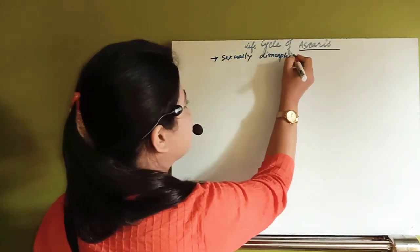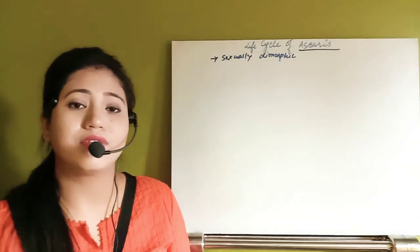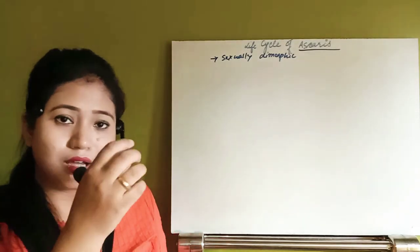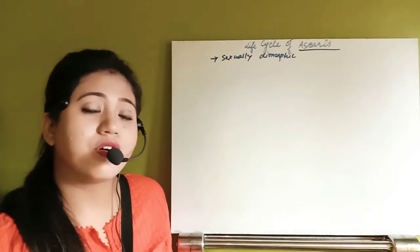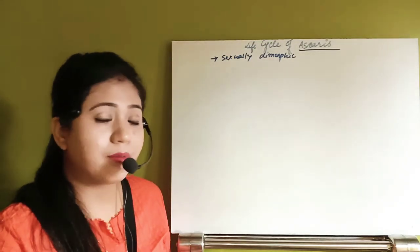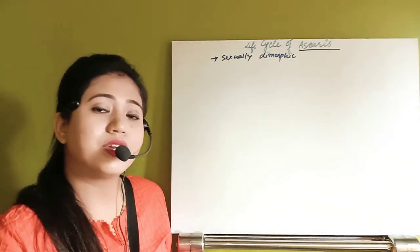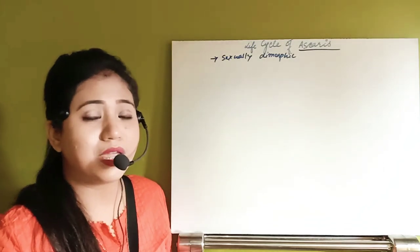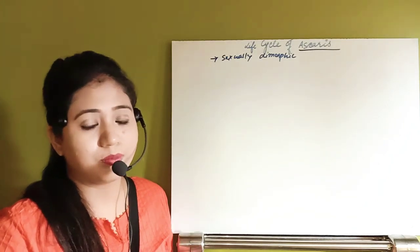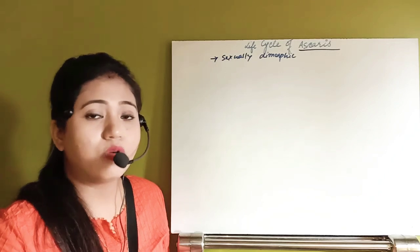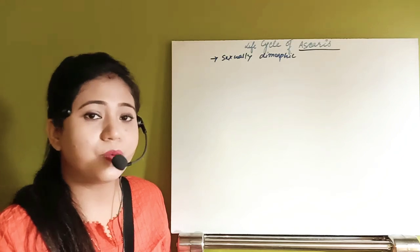Sexually dimorphic means the organism has completely separate male and female individuals. Females are long with a straight caudal part. Males are shorter with a curved tail. Females have separate gonopore and anus, while males have a common aperture — the cloaca — through which they release gametes, urine, and fecal matter.